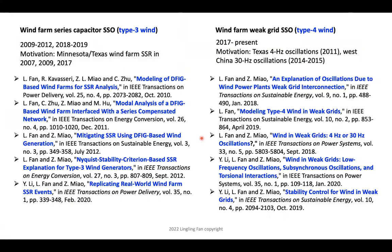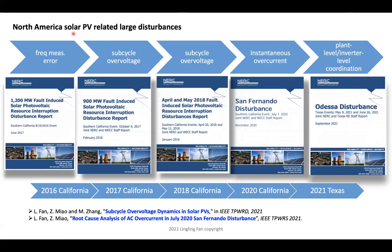I'm including past research papers for those interested. North America solar PV has seen many disturbances in recent years, and a LOOK working group has been writing reports available online. Some of these are dynamic events — for example, protection events caused by frequency measurement error, sub-cycle voltage, or over-current. Dynamic analysis can be used to tackle these and understand root causes. Two papers published on these two events were supported by DOE C2.